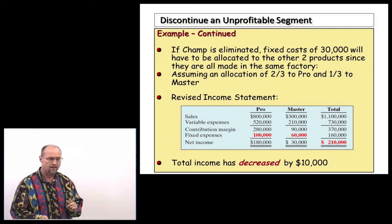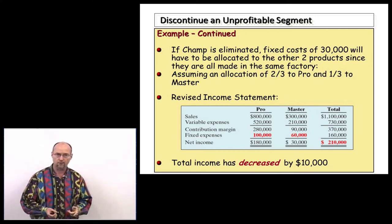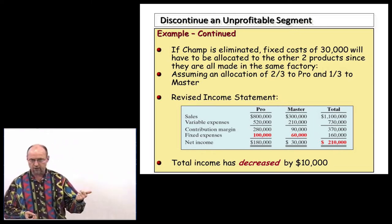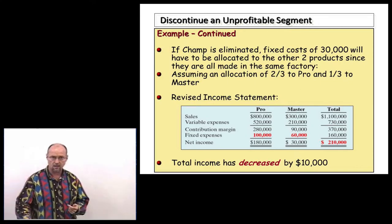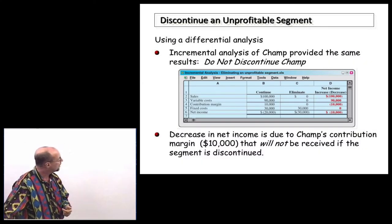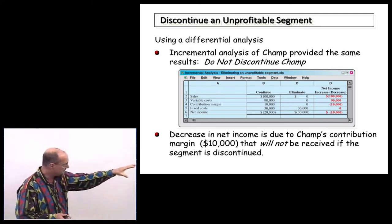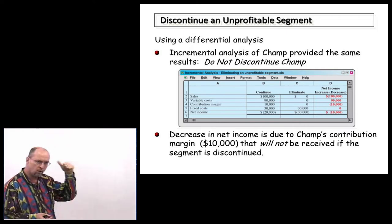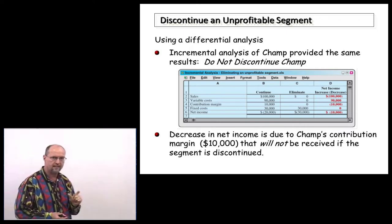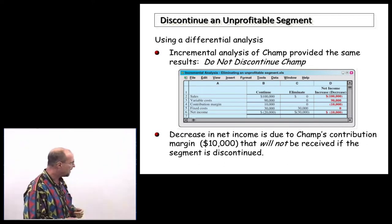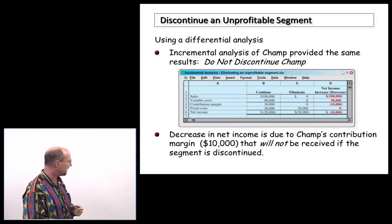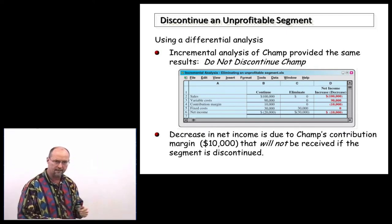Rarely do you eliminate all fixed costs unless the discontinued product is manufactured in a completely separate facility that can be fully shut down with employees laid off. It's very common for companies to produce multiple products under one roof, where depreciation, property tax, and insurance aren't going anywhere. Using a differential analysis format, we reach the same conclusion: do not discontinue the Champ line or we'll lose $10,000. This is simply analyzing the difference between continuing versus elimination from a differential standpoint.